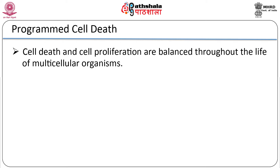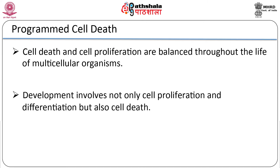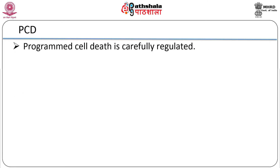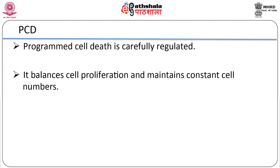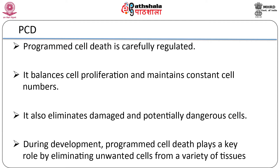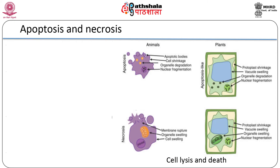Cell death and cell proliferation are balanced throughout the life of multicellular organisms. Animal development involves not only cell proliferation and differentiation but also cell death. Most cell death occurs by a normal physiological process of programmed cell death, which is carefully regulated in adults. It balances cell proliferation and maintains constant cell numbers, and also eliminates damaged and potentially dangerous cells. During development, programmed cell death plays a role in eliminating unwanted cells from a variety of tissues.